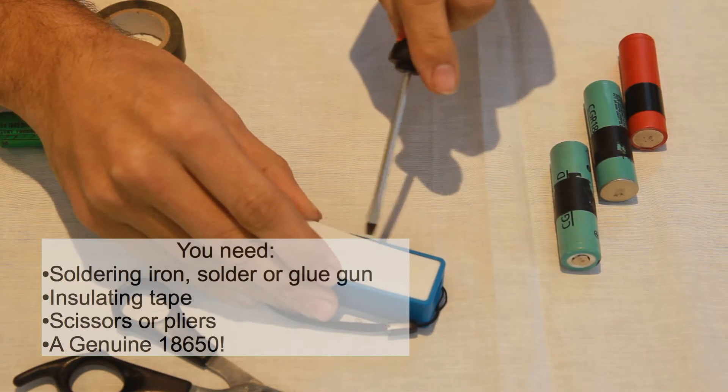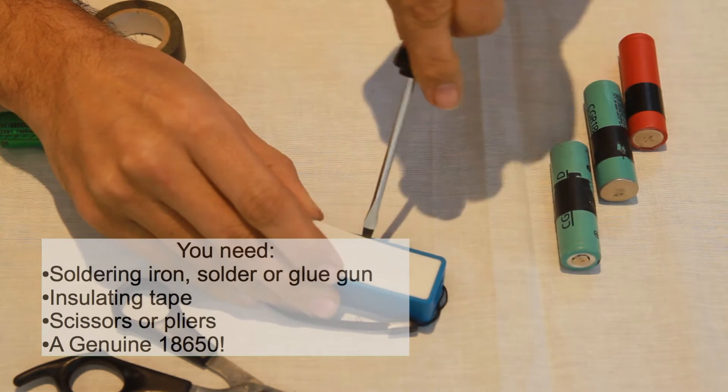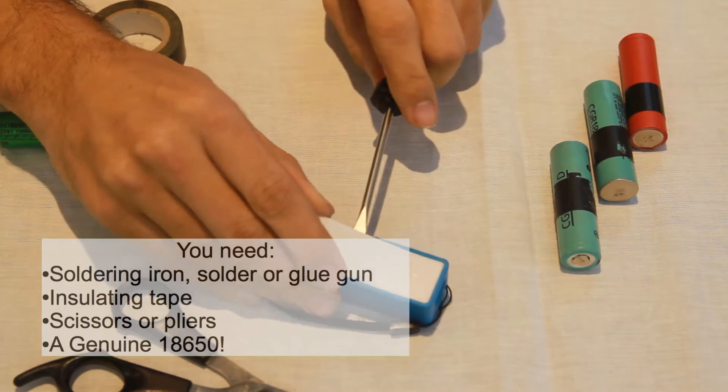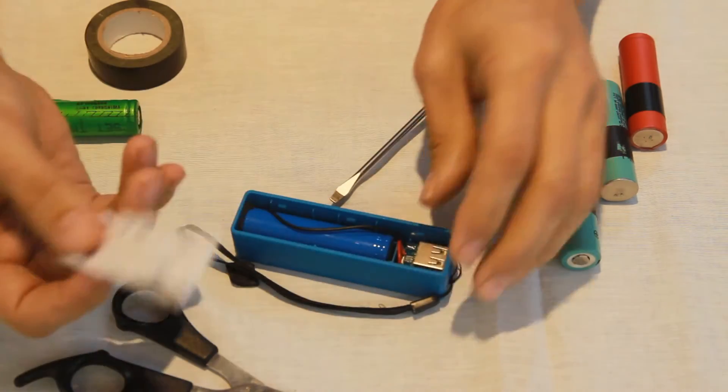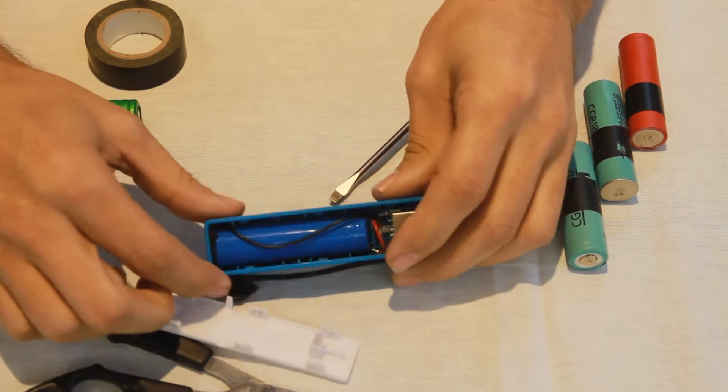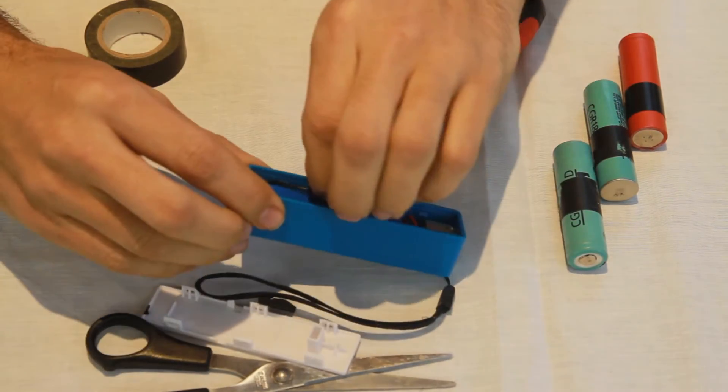For this job you're going to need a soldering iron, some scissors, solder. But if you don't have a soldering iron you could probably do a glue gun as well. And if you don't have a glue gun you could probably just do it with insulation tape, it would probably work just as well.